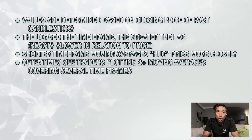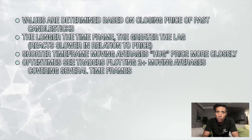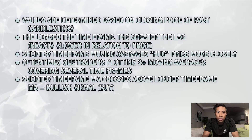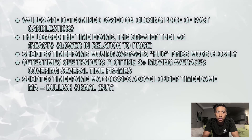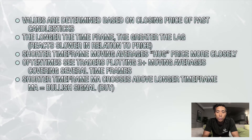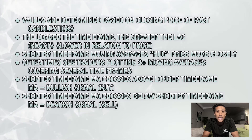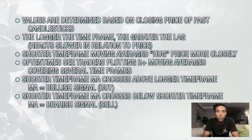You'll oftentimes see traders plotting two or more moving averages covering several timeframes. They'll do this because the moment they see the shorter timeframe moving average cross above the longer timeframe moving average, they'll interpret this as a bullish signal and buy. The opposite can be done when it crosses below — it's a bearish signal, so you may want to sell.